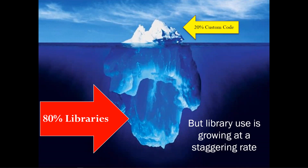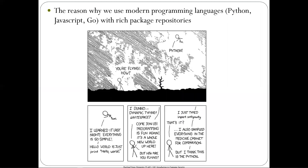What has grown dramatically over the last 10 to 20 years is the amount of libraries we're using to build applications on top of, and this is growing at a staggering rate. A conservative estimate is that about 20% of your application is custom code, but like an iceberg, 80% is someone else's code — code written by people whose secure coding practices and intentions you don't know.